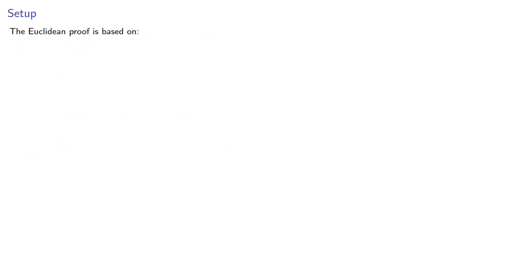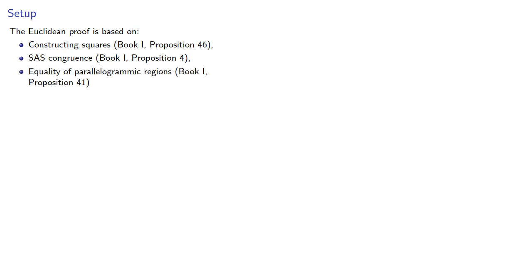The Euclidean proof is based on constructing squares (Book 1, Proposition 46), what we now call side-angle-side congruence (Book 1, Proposition 4), and the equality of parallelogramic regions (Book 1, Proposition 41).